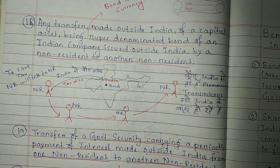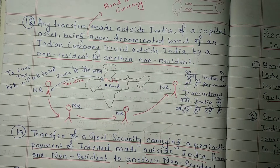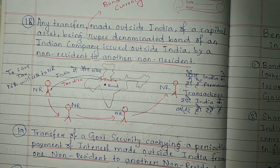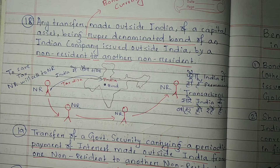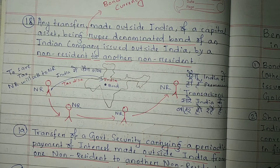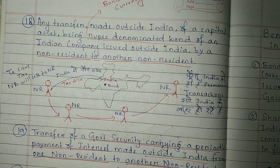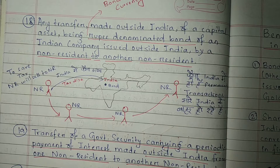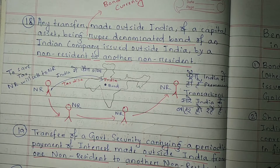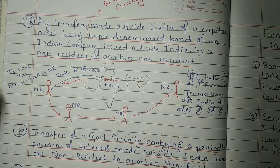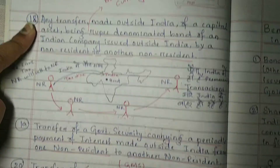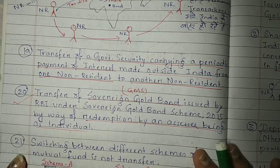Hi guys, thank you so much for watching my channel, The Twisted Olive. Today we are going to continue again with the transactions that are not regarded as transfer. We have 17 points covered already, and today we are going to cover the last four points, from point number 18 to point number 21.